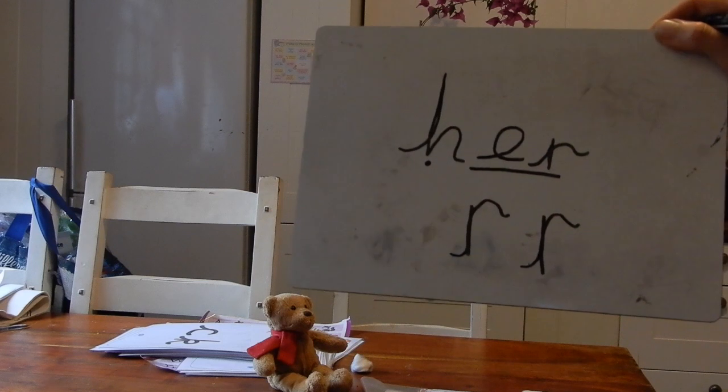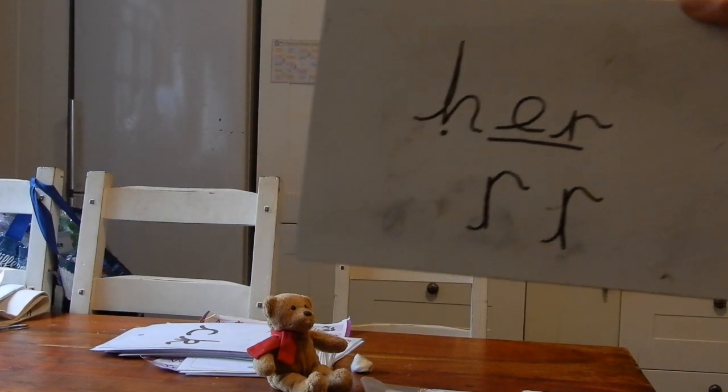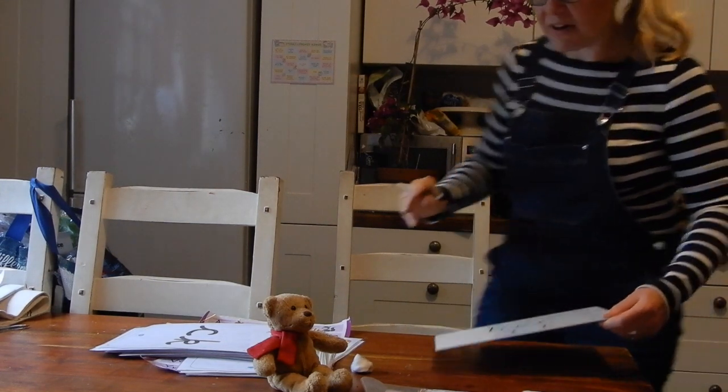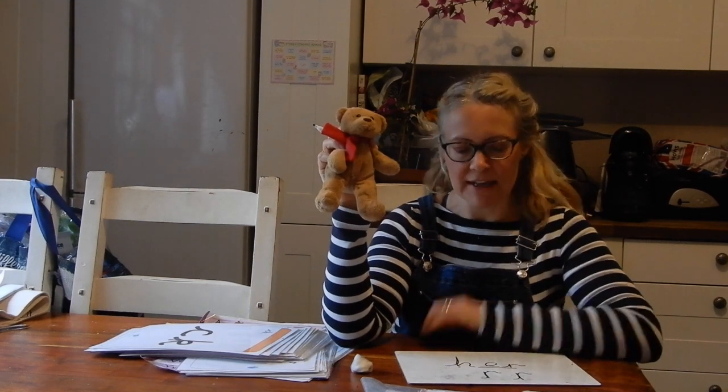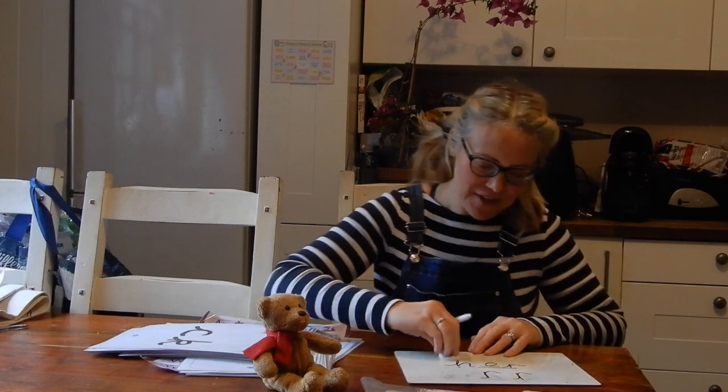A sentence with 'her' in it. The kids at home are trying to think of one. Teddy wants to say: 'I like her hair, it's very pretty.' Thank you, Teddy. So that is writing 'all,' 'my' and 'her.' We know which bits are helping us and which bits are tricking us.